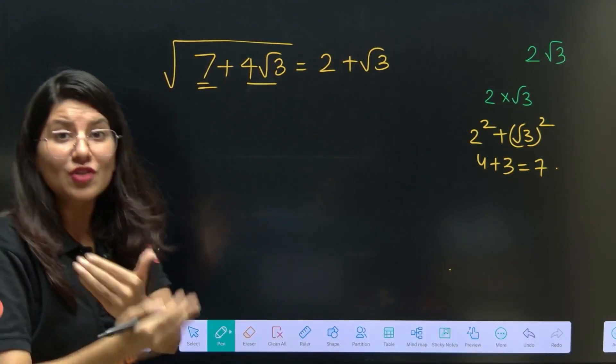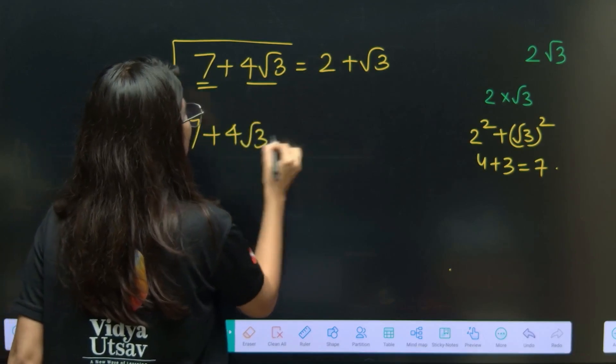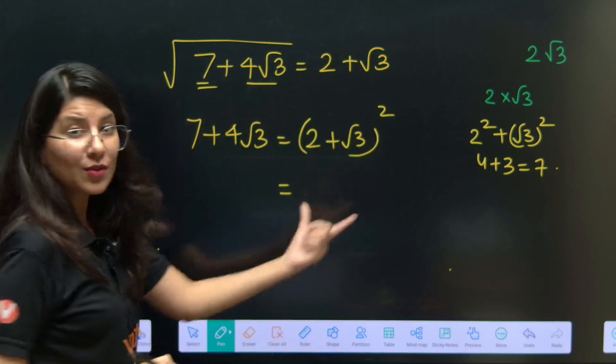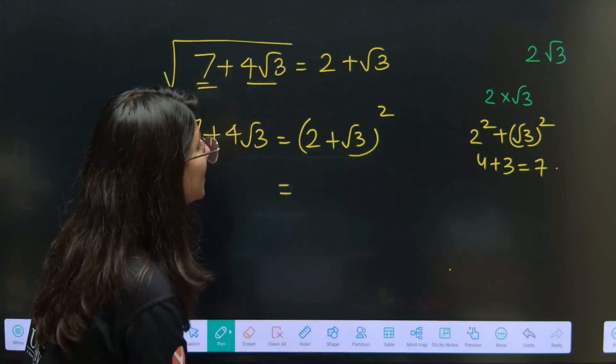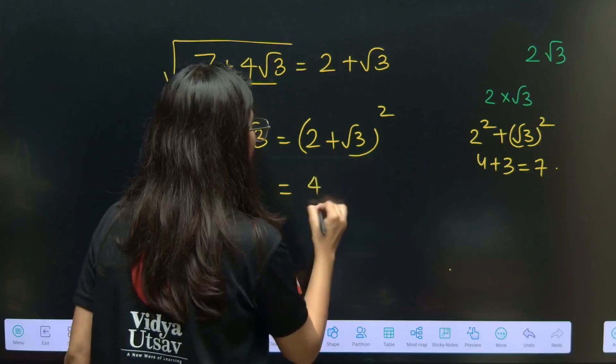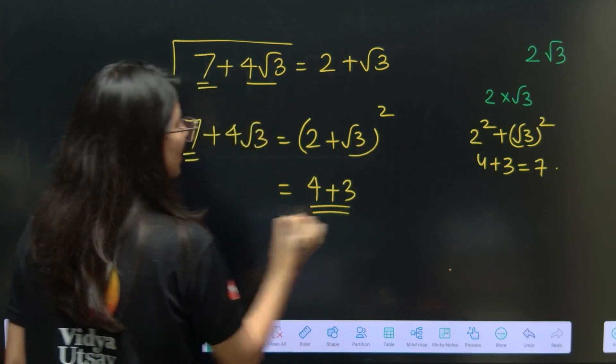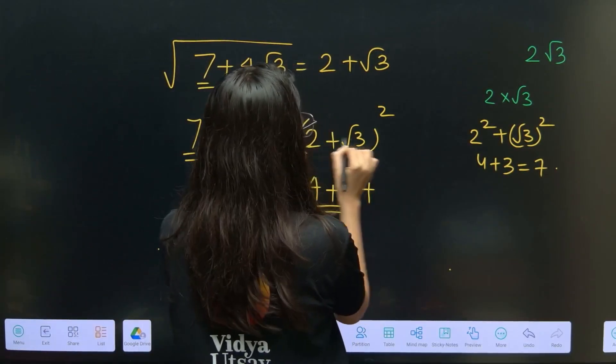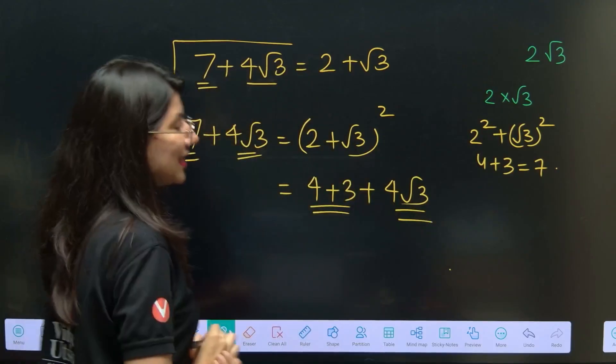And just in case you want to verify, you will realize 7 plus 4 root 3 will be nothing but 2 plus root 3 whole square. Check it out. 2 square plus root 3 square, 2 square is 4, root 3 square is 3. So 4 plus 3 is 7 matching, plus twice of A into B. Twice of 2 and root 3 gives you 4 root 3, so it will match with this.